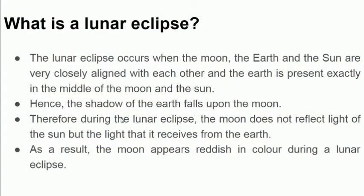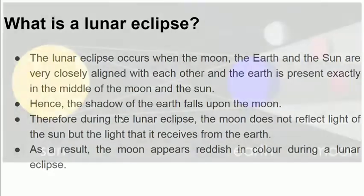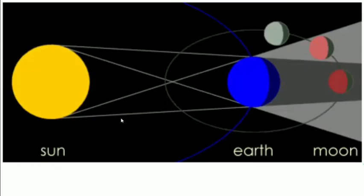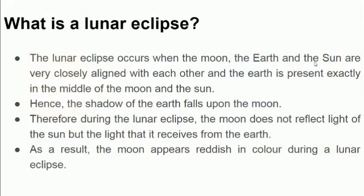Lunar eclipse. The sun is here, this is our earth, and here is our moon. A lunar eclipse mainly occurs when the moon, the earth, and the sun are very closely aligned with each other, and the earth is exactly in the middle between the moon and the sun.